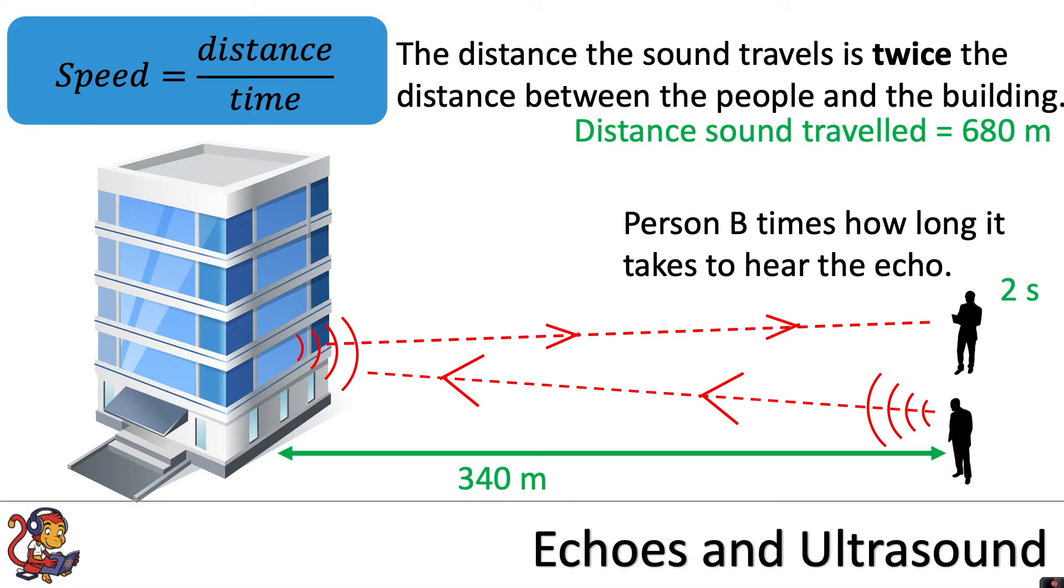If we put those two numbers into our equation, we've got the distance the sound traveled at 680 meters and the time it took to hear the echo of two seconds. Distance divided by time: 680 meters divided by two seconds would give us the speed of sound of 340 meters per second.